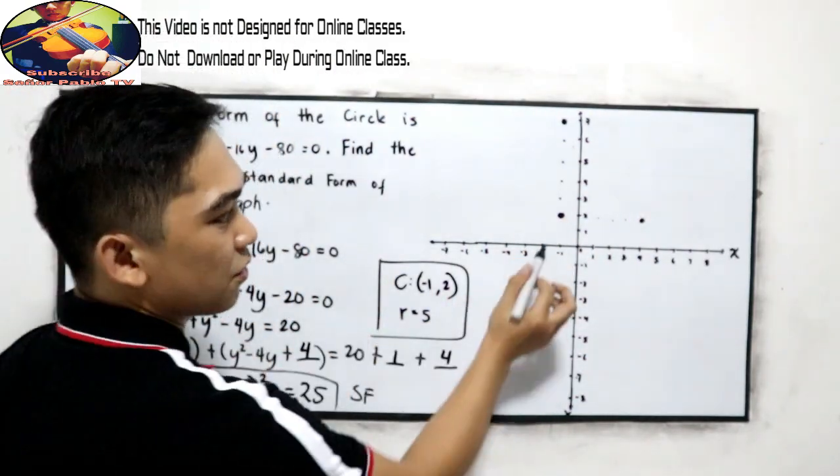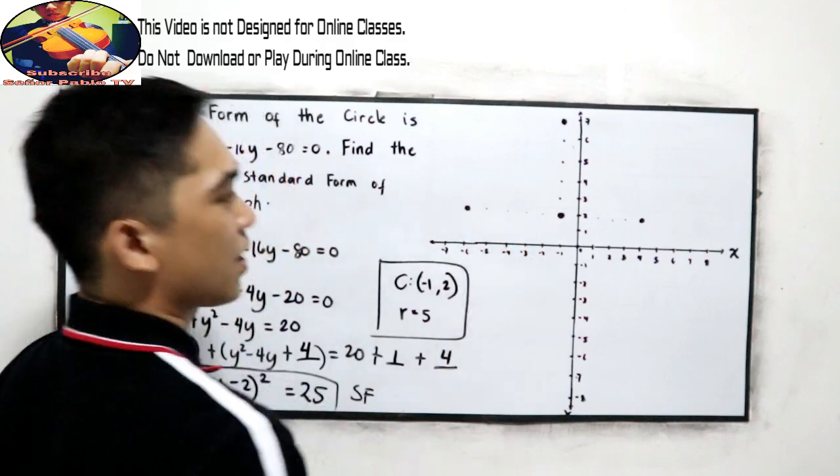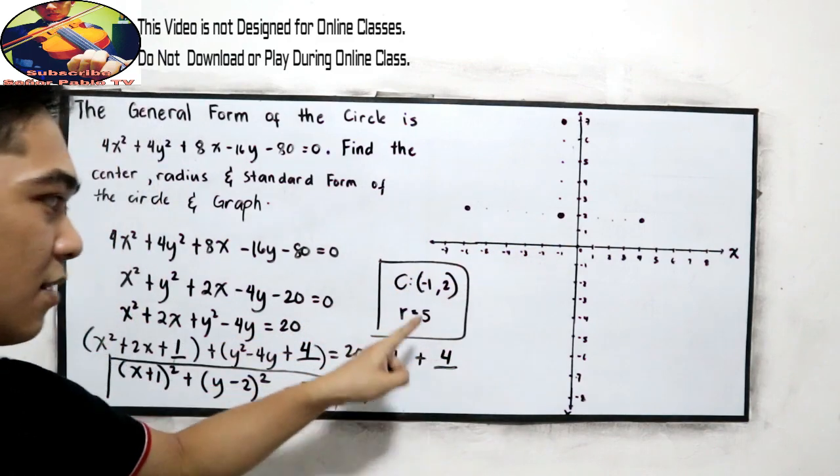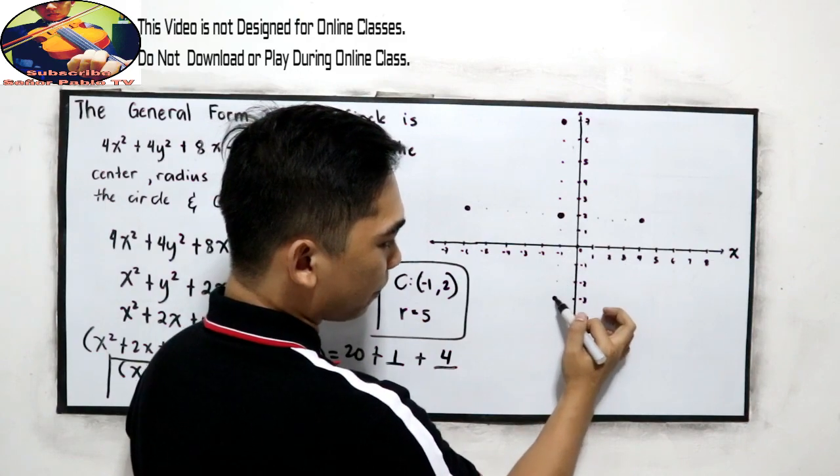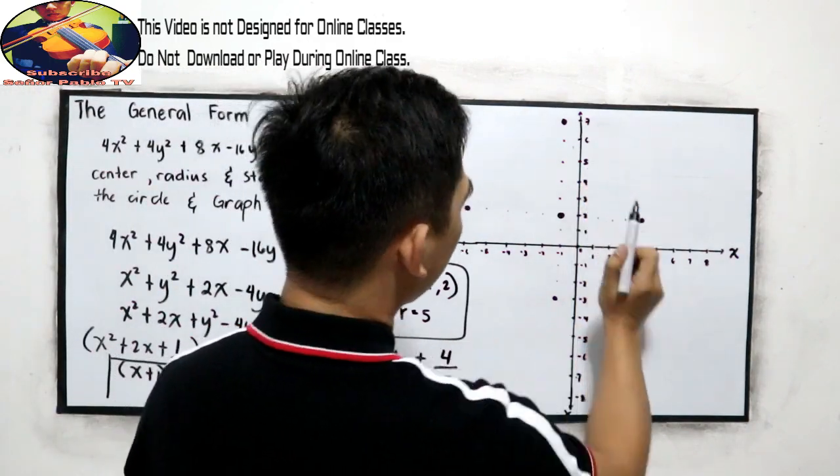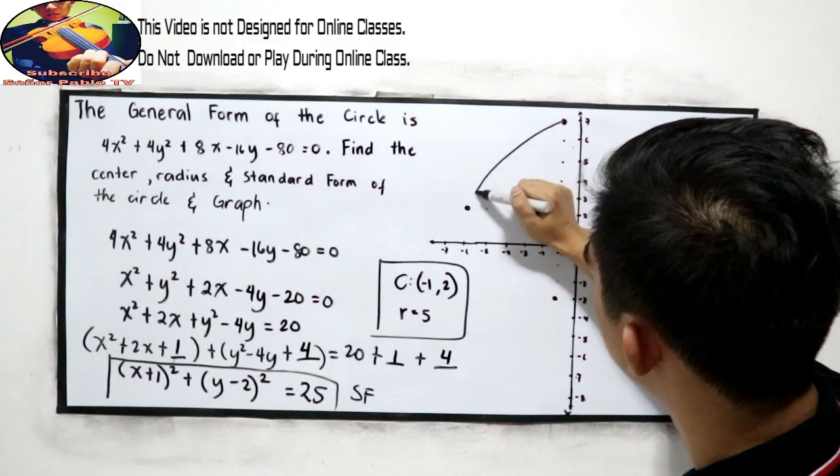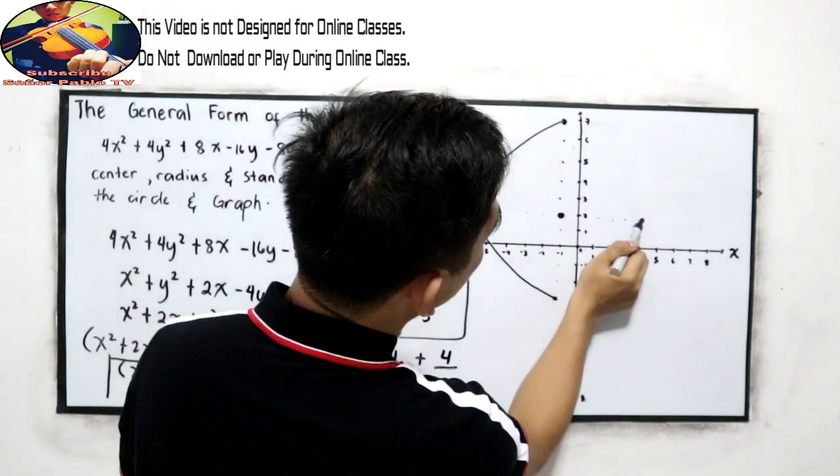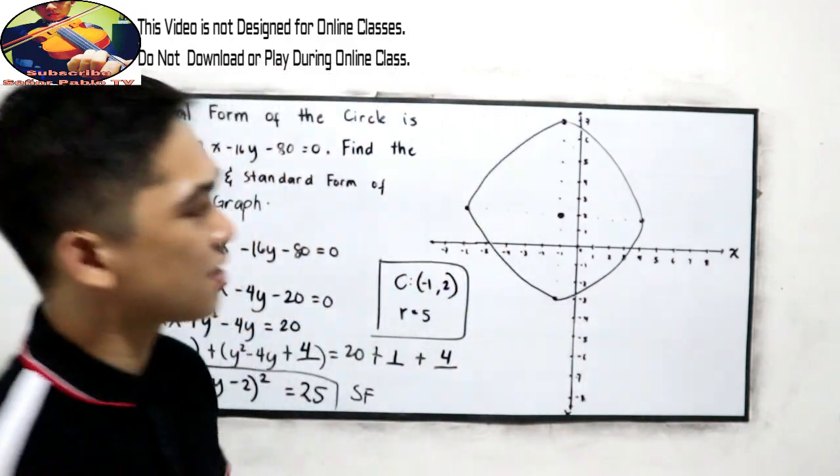And the leftmost, from the center, count 5. 1, 2, 3, 4, 5. Negative 6. And bottommost, count 5 below. 1, 2, 3, 4, 5. Now, connect the circle, or connect the points of the circle. This should be the circle. Assume that this is a perfect circle. This is now our circle.